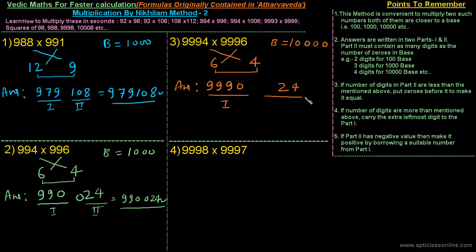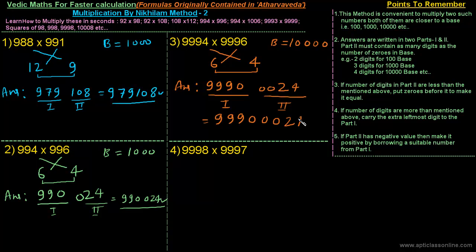The second part is the multiplication of 6 and 4, that is 24. Since the base is ten thousand — which contains four zeros — we have to put two more zeros before 24 so that it becomes a four-digit number: 0024. So the final answer is 99900024.